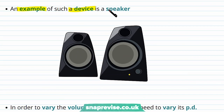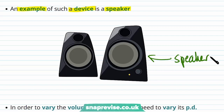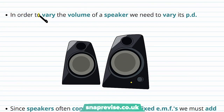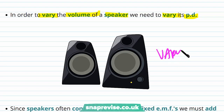An example of such a device is a speaker. A speaker is connected to a power supply in order to play music or a sound. However, in order to vary the volume of a speaker we need to vary its potential difference. Quite often when we use a speaker we don't want it at a fixed volume - we want the flexibility to change the volume, and we actually need to vary the potential difference of the speaker in order to vary the volume.